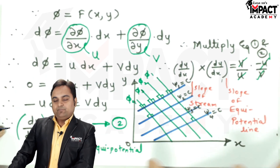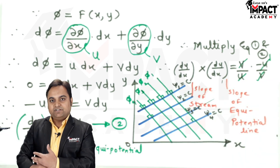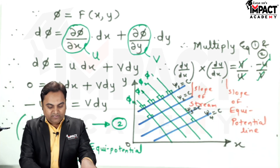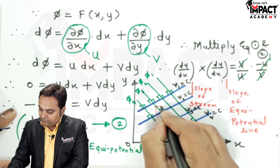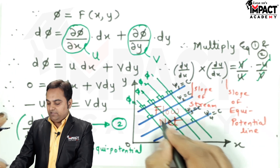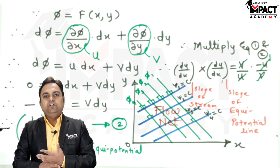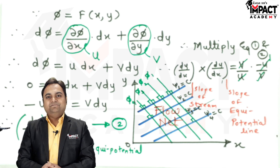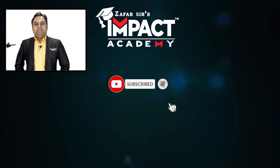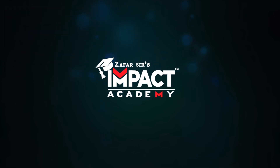We have proved that streamlines with positive slope and equipotential lines with negative slope cut each other at 90 degrees — they are orthogonal. The profile formed at their intersection is called the flow net. The flow net can be defined as the intersection of the streamlines and the equipotential lines. In short, we have proved that streamlines and equipotential lines are perpendicular to each other, and their intersection gives us the flow net. If you find the videos helpful, please like, share, comment, and subscribe. Thanks for watching.